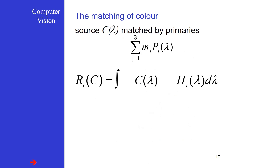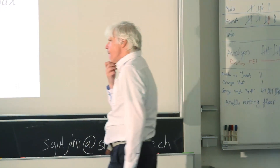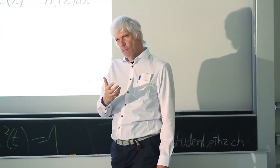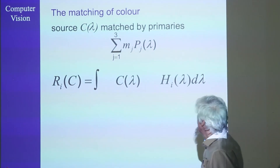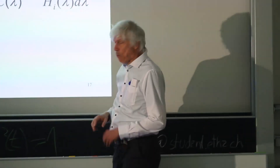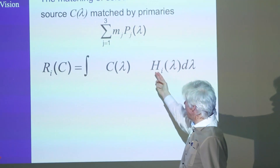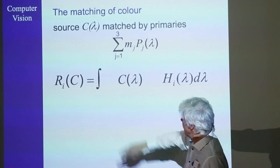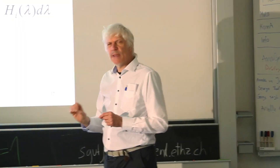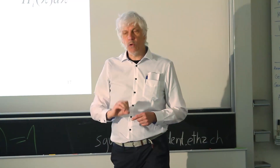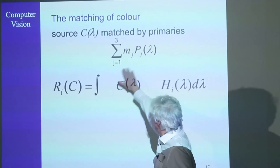A first question we ask ourselves is: given the three primaries the CIE has defined — these three monochromatic sources — how could we combine them to give the same impression as a given light source C(λ)? That light source gives three responses from the three types of cones H1, H2, H3. Now we start to play a dirty trick on the system, because the system can be fooled — as long as we have the same responses, you can't tell the difference. So we replace the given light source with a linear combination of the three primaries.